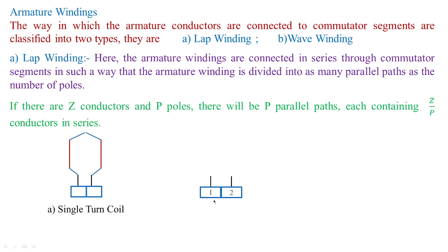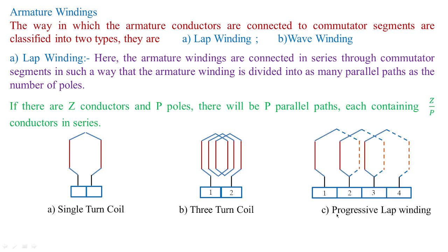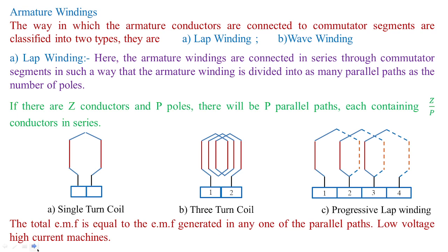For example, you can have two commutator segments connected to the armature such that on the left side you have three conductors and on the right side three conductors — one representing north and one south. This type of connection is regarded as a three-turn coil. Likewise, you can have n-turn coils for different types of connections. Generally we employ progressive lap winding. The total EMF equals the EMF generated in any one of the parallel paths. This type of connection is generally employed for low voltage and high current machines.